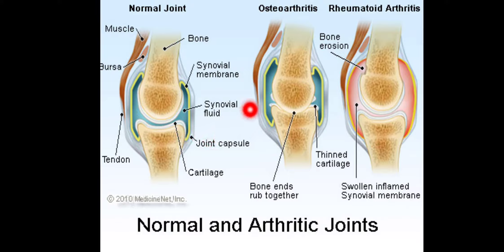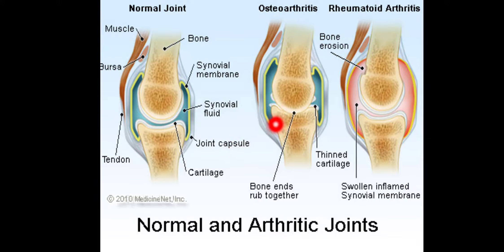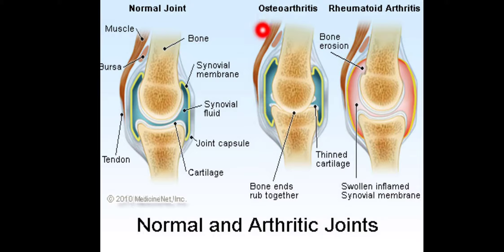In osteoarthritis, the space between the two joints becomes narrower and the cartilage becomes thin, but there is no bone erosion or cartilage destruction. Osteoarthritis is usually an age-related condition seen mostly in elderly patients, though it can sometimes occur in younger people as well.